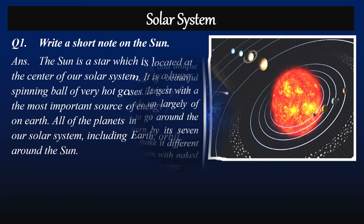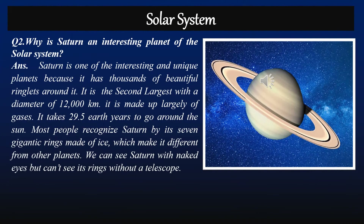All of the planets in our solar system, including earth, orbit around the sun. Question two: Why is Saturn an interesting planet of the solar system? Answer: Saturn is one of the interesting and unique planets because it has thousands of beautiful ringlets around it. It is made up largely of gases and it takes 29.5 earth years to go around the sun.